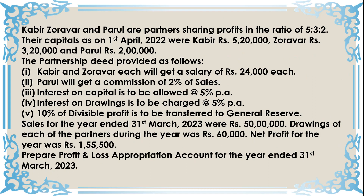This question is from the TS Grewal textbook, backside exercise. Kabir, Zorawar and Paru are partners sharing profits in the ratio of 5:3:2. Their capitals as on 1st April 2022 were: Kabir ₹5,20,000; Zorawar ₹3,20,000; and Paru ₹2,00,000. The partnership deed provides: Kabir and Zorawar will each get a salary of ₹24,000; Paru will get a commission of 2% of sales; interest on capital is allowed at 5% per annum; interest on drawings is charged at 5% per annum; and 10% of divisible profit is to be transferred to general reserve.